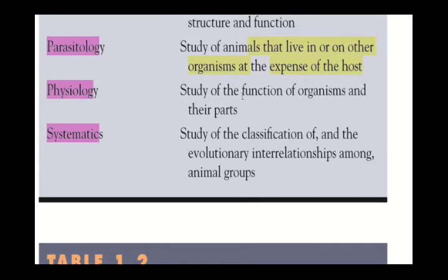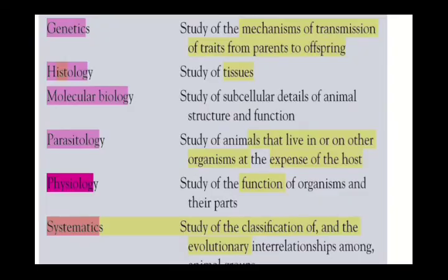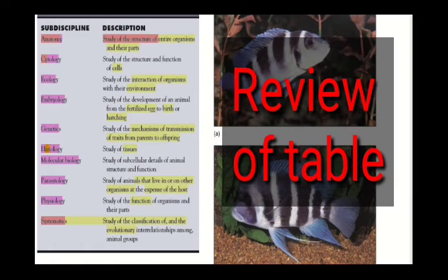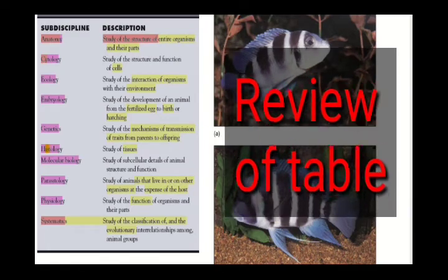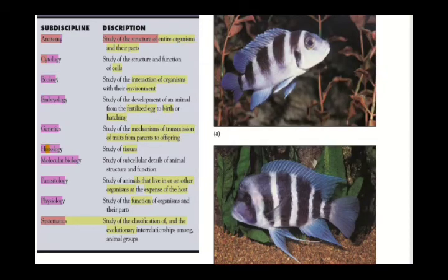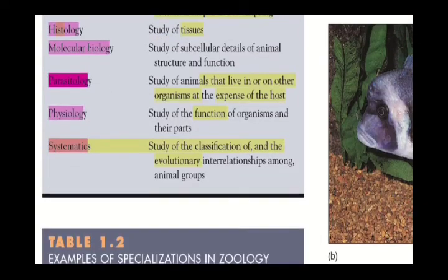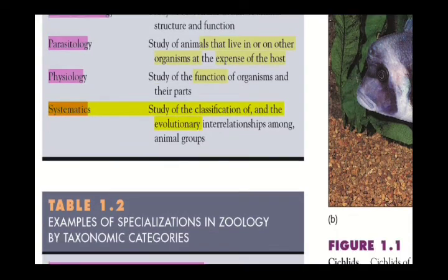Physiology is the study of the functioning of organisms and their parts. Systematics is the study of classification and evolutionary interrelationships among animal groups — how animals can be classified and how they relate evolutionarily. To recap: anatomy is about structure, cytology about cells, ecology about organism-environment interactions, embryology about development, genetics about inheritance, histology about tissues, parasitology about parasites, physiology about functioning, and systematics about classification.